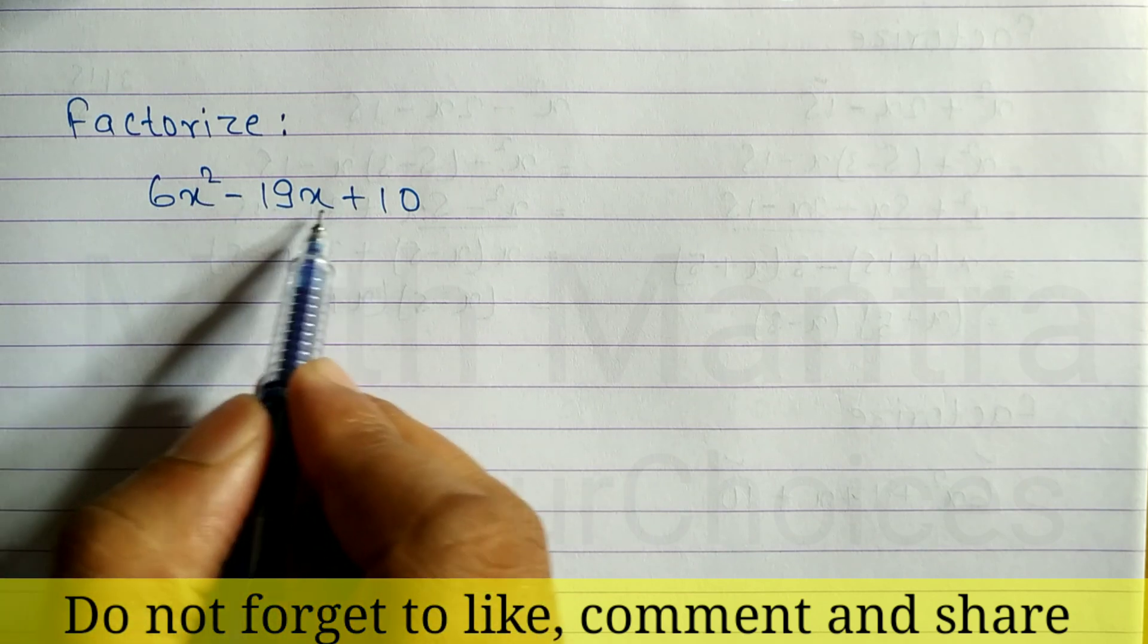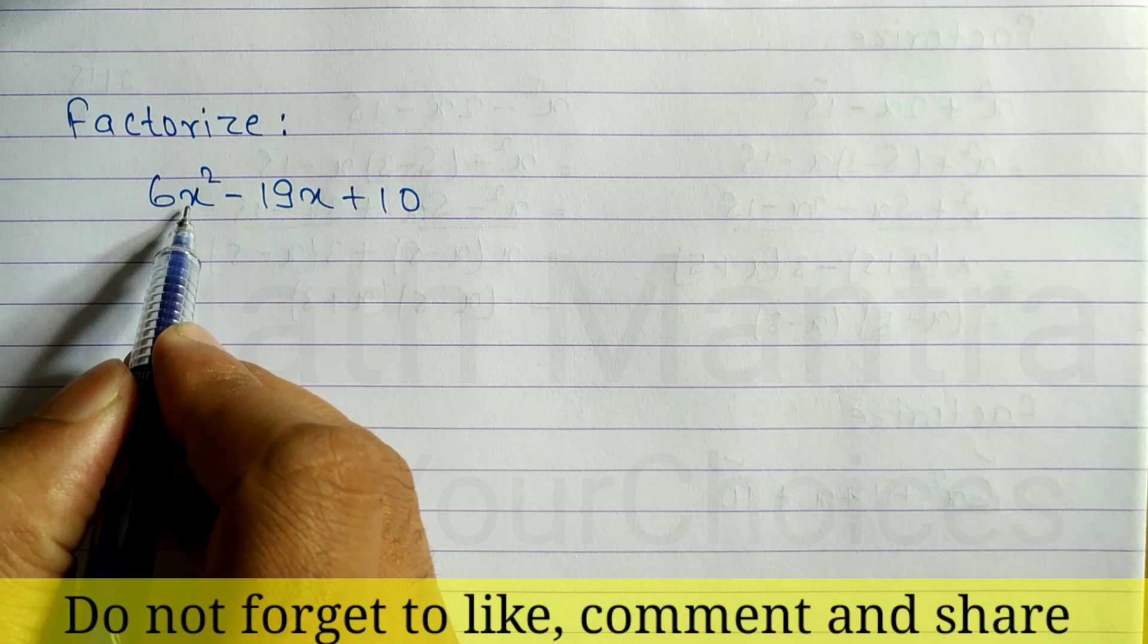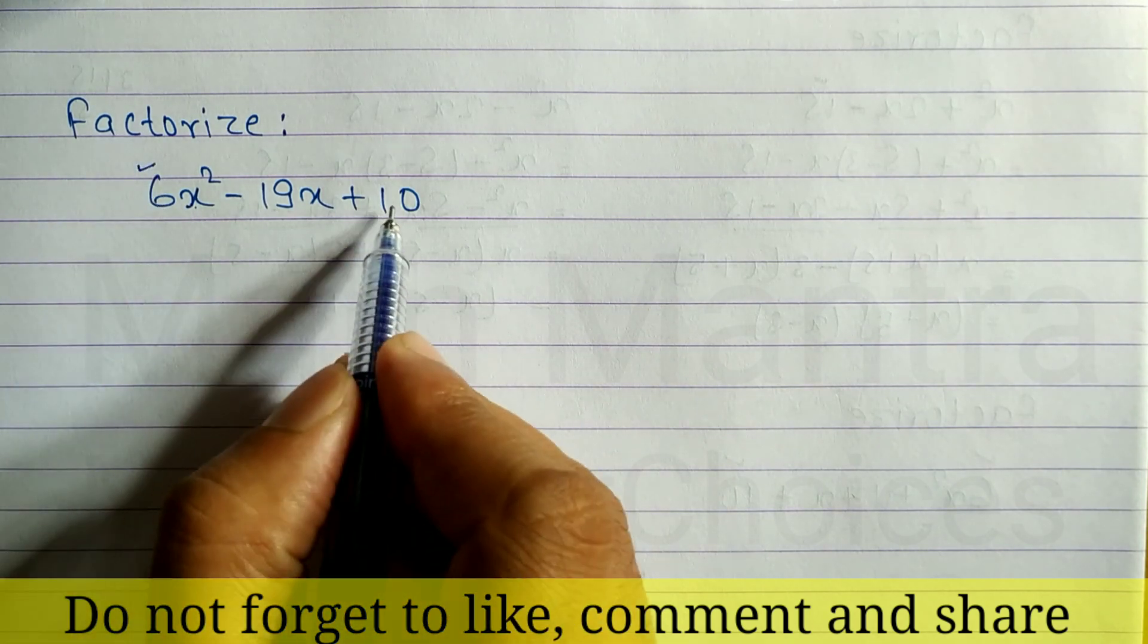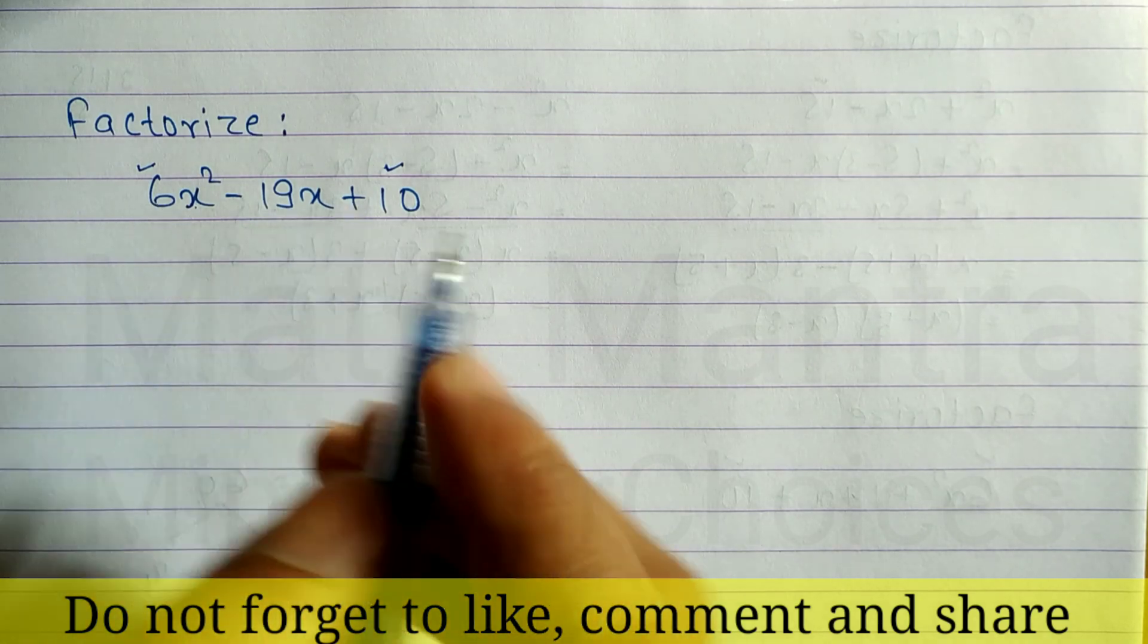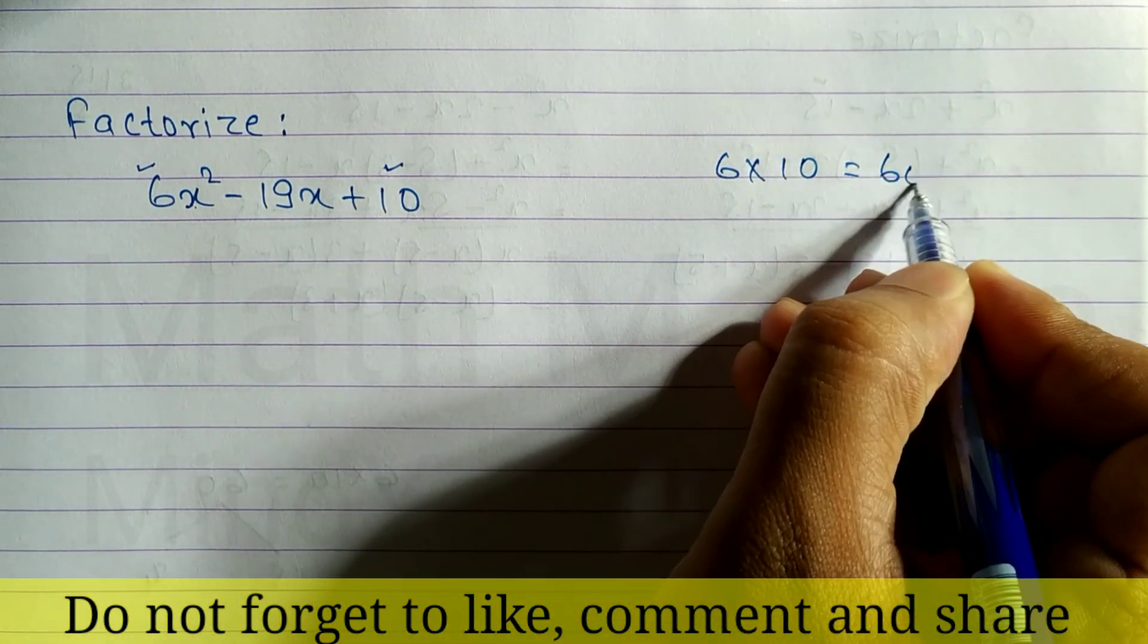We have an expression 6x² - 19x + 10. In this type of question, first of all, we have to look at the coefficient of x². What is the coefficient of x² here? 6, and the constant number 10. These two numbers we have to multiply. 6 times 10 equals 60.